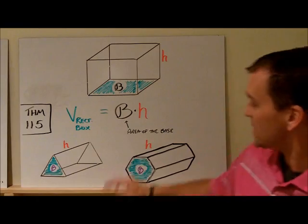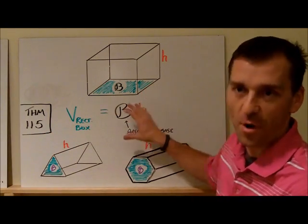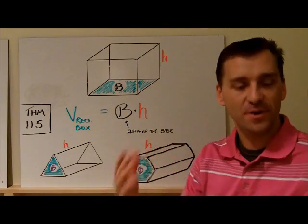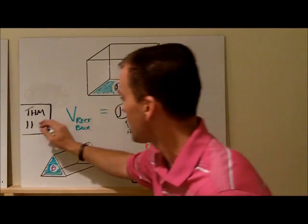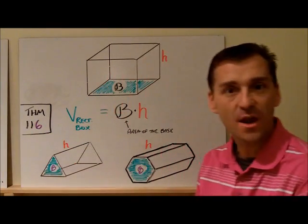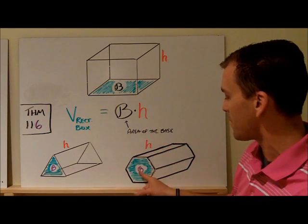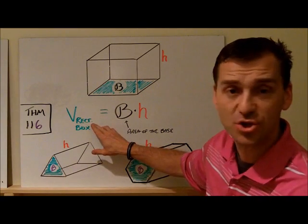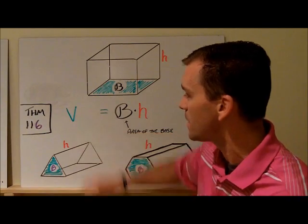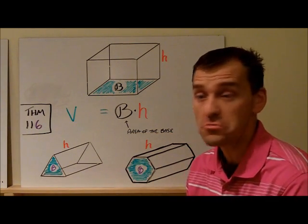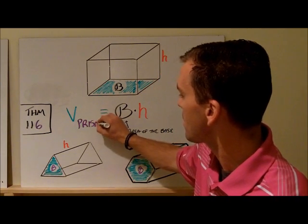This is theorem 115 for the volume of a rectangular box. But here's what's cool - this is also the same theorem, they just changed the number to theorem 116, and it's the same formula: find the area of the base.